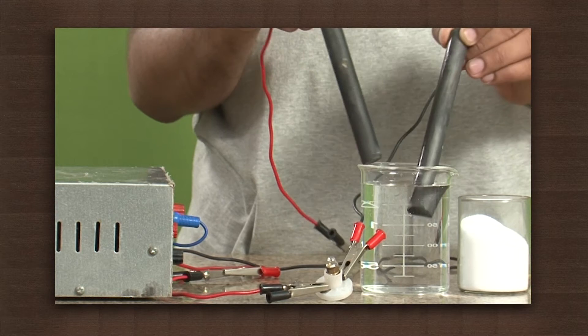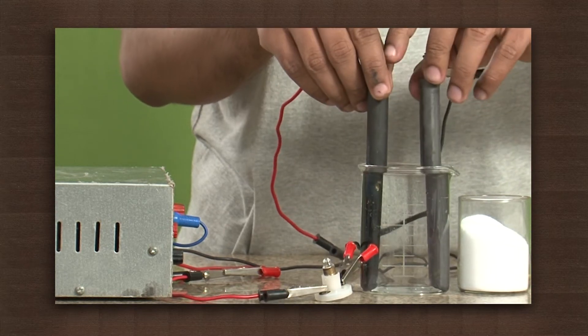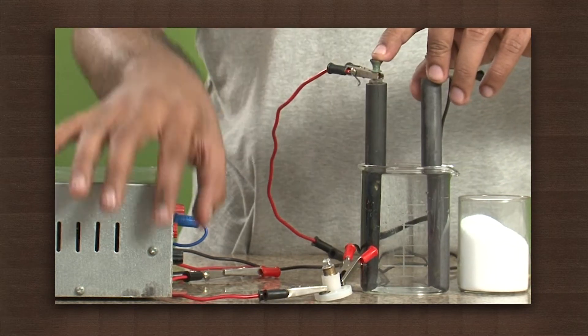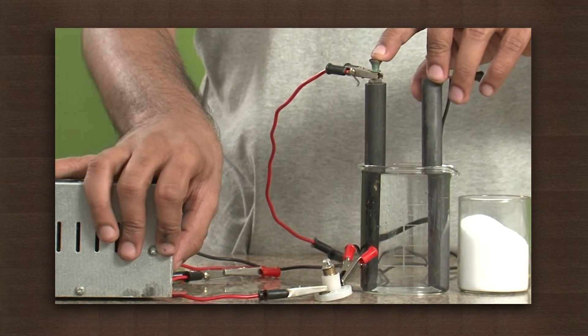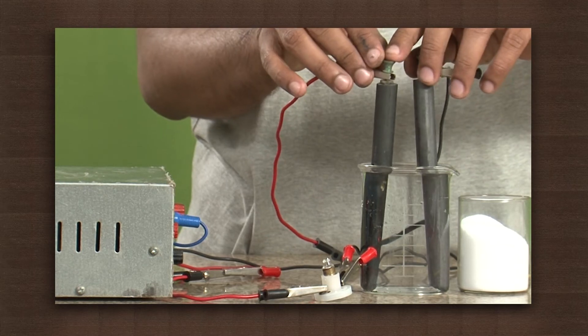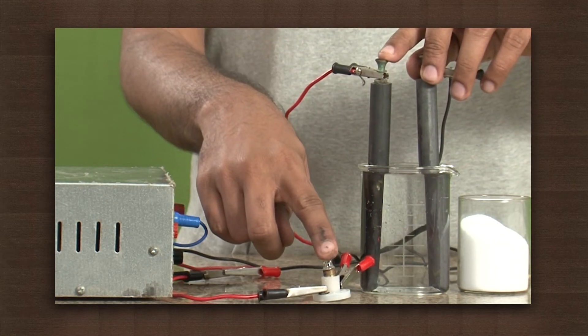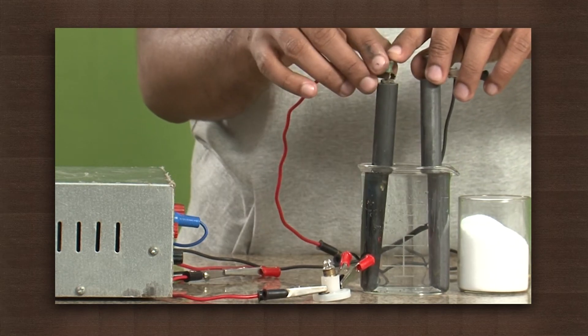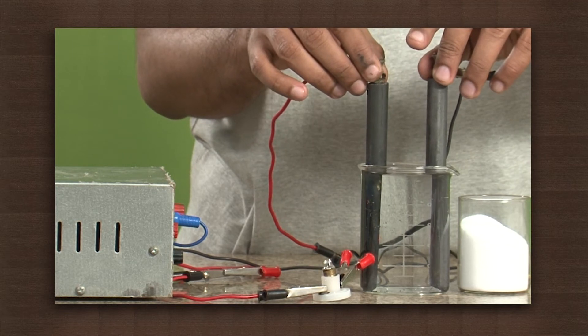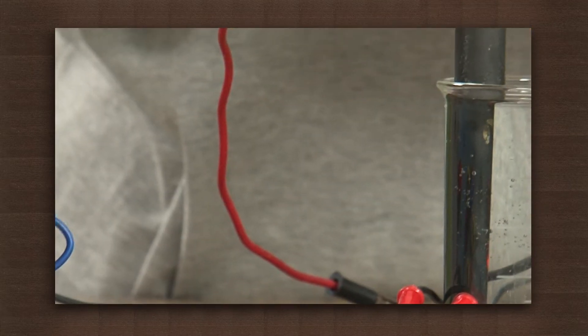Connect the carbon electrodes to the battery eliminator and place them in the beaker containing distilled water. Make sure the electrodes are not in direct contact with one another. Now connect the bulb to these electrodes as shown here. Remember, the bulb will glow only if the circuit is closed.